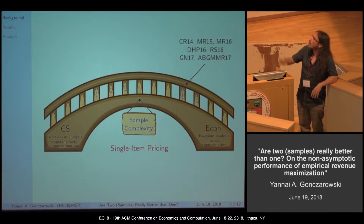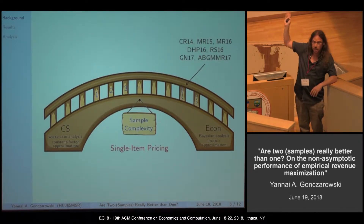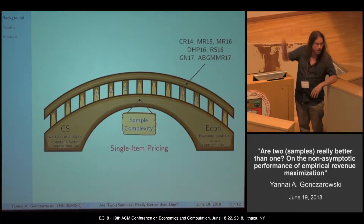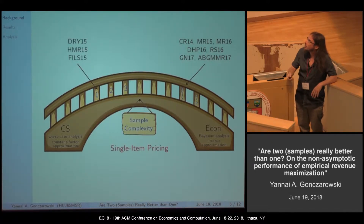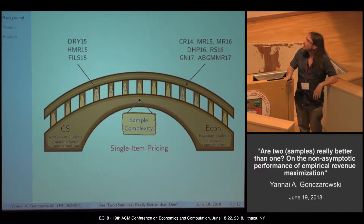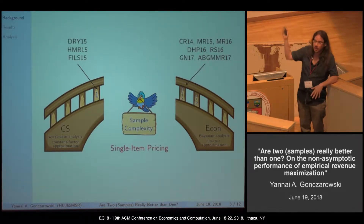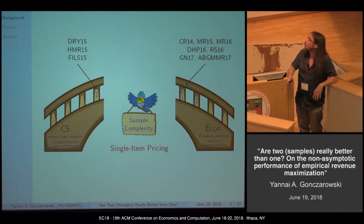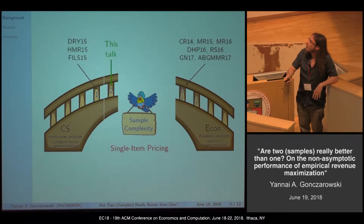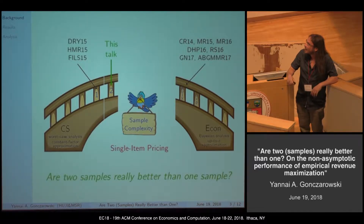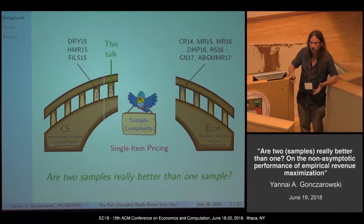There has been a lot of research on polynomially many samples on one hand, and on what can be done with one sample on the other hand. Quite surprisingly, there's been nothing in the middle — this entire amazing bridge has been left unexplored. So this talk is going to be about the next step in this bridge: two samples. And we're going to ask what seems like a very fundamental question — are two samples really better than one sample? We're going to ask this in a variety of ways.